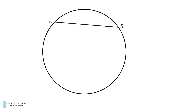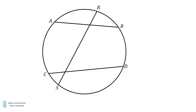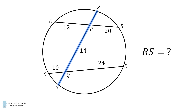Hey, this is Presh Talwalkar. A circle contains two chords AB and CD that do not intersect. Chord RS intersects both of these chords — it intersects chord AB at the point P and chord CD at the point Q. If AP equals 12, PB equals 20, CQ equals 10, DQ equals 24, and PQ equals 14, what is the length of chord RS? This is adapted from a problem on the 2021 Bangladesh Mathematical Olympiad. I thank Mumtahina from Bangladesh for the suggestion.